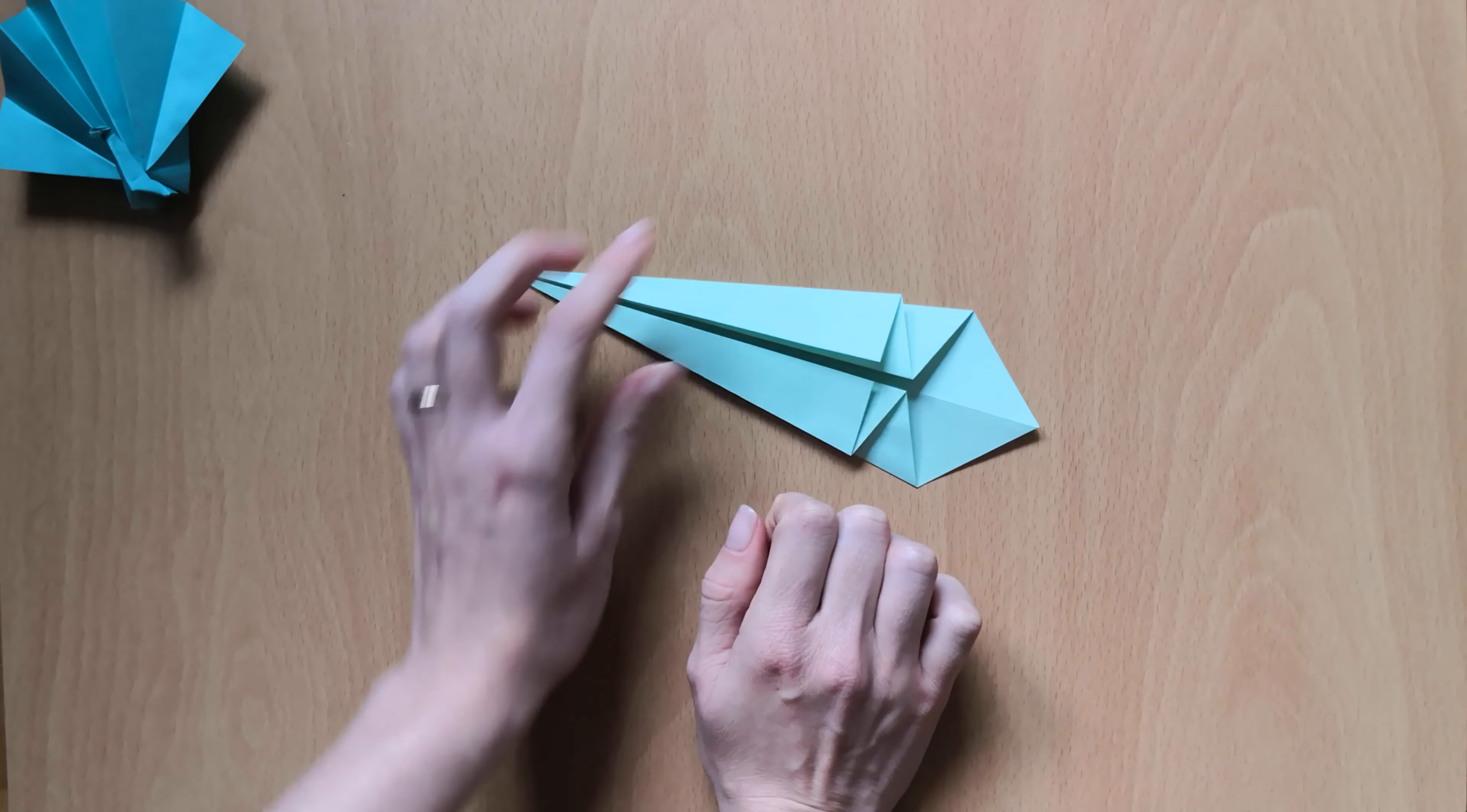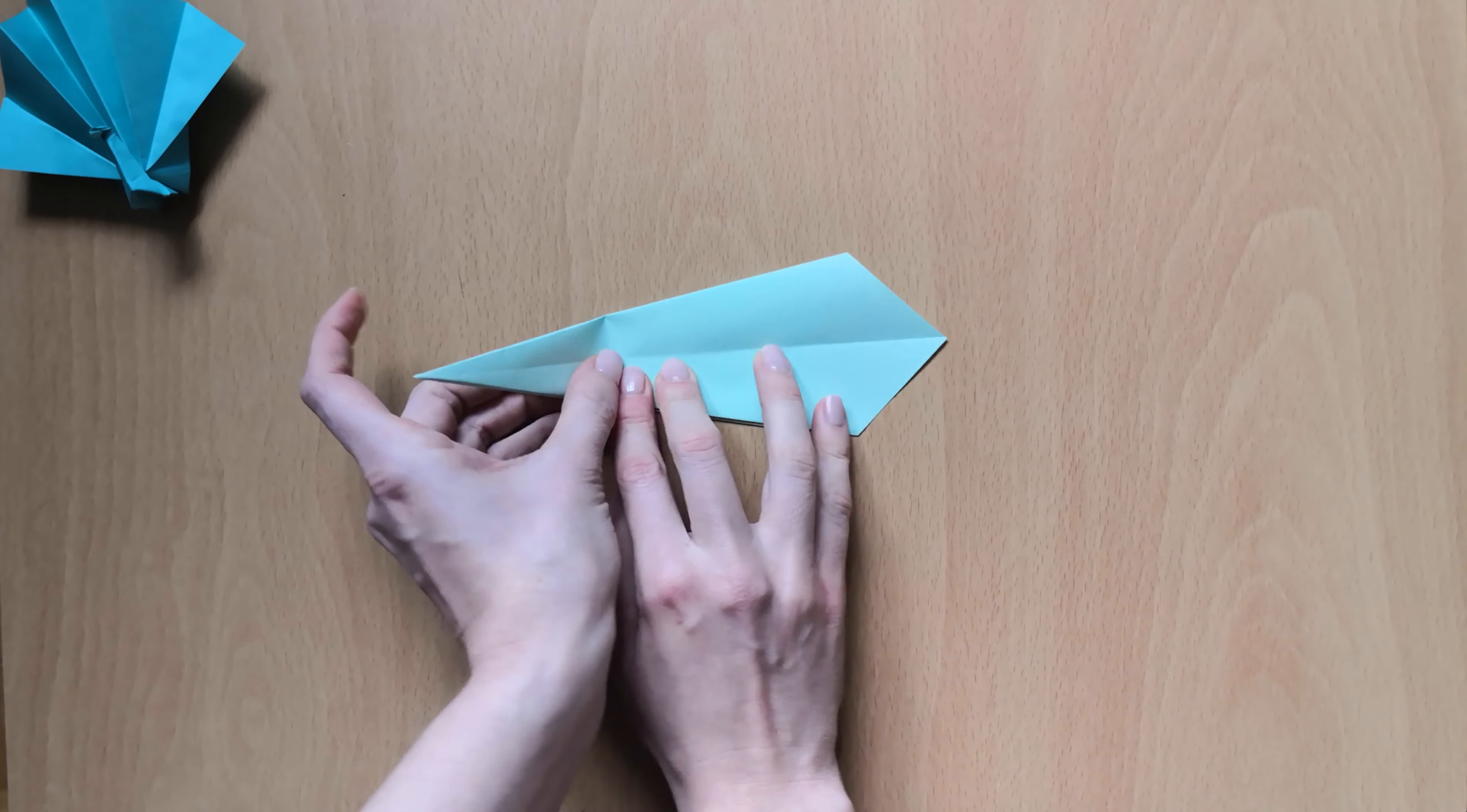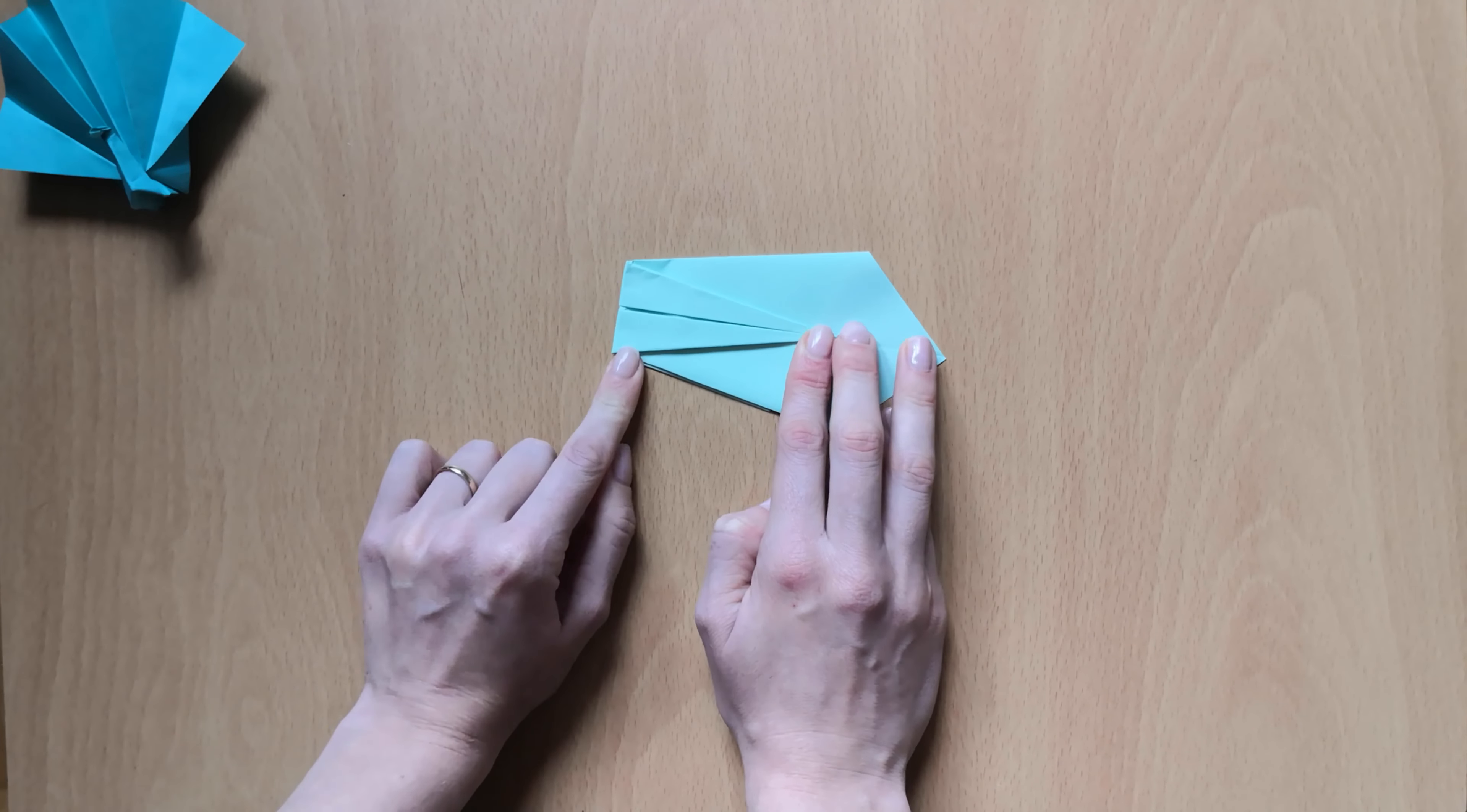Now we'll turn our paper around. And we'll fold the point of the paper to this invisible line that goes from this corner here to this corner, so to this line. Like this.